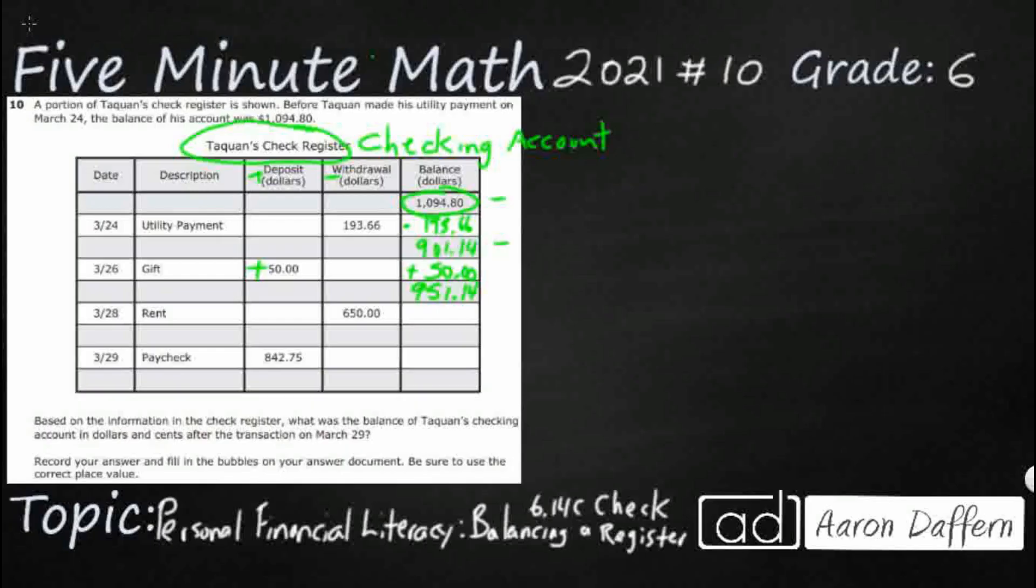So he's got to take away a big portion of money, $650 even. We're going to take that away, and that's going to leave us with $301.14.